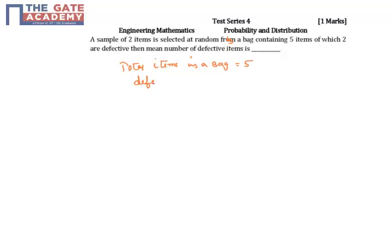Now, what about defective items? Defectives are 2 and good ones are 3.